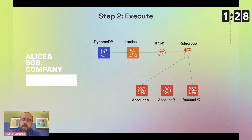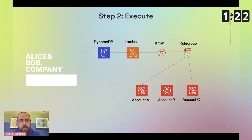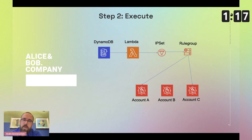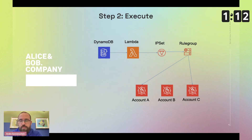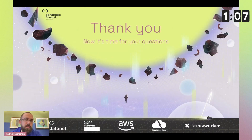Why a rule group? Rule groups are very useful because they can be shared across multiple instances. So your intelligence department can gather information and supply it to all other departments. And that's what I wanted to share with you.